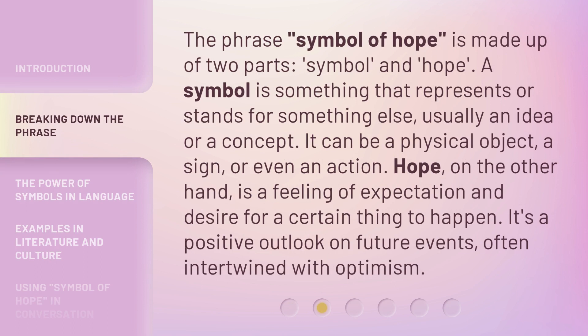The phrase Symbol of Hope is made up of two parts: Symbol and Hope. A symbol is something that represents or stands for something else, usually an idea or a concept. It can be a physical object, a sign, or even an action. Hope, on the other hand, is a feeling of expectation and desire for a certain thing to happen. It's a positive outlook on future events, often intertwined with optimism.